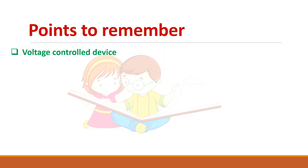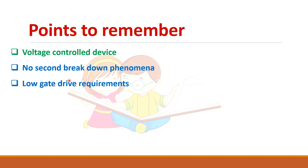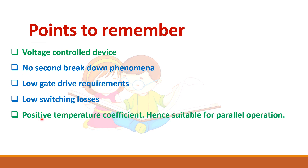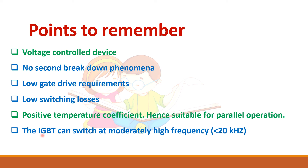Key points to remember: IGBT is a voltage-controlled device. There is no secondary breakdown problem. Gate drive requirement is low. It has low switching losses and a positive temperature coefficient, making it suitable for high-frequency applications — though its frequency capability is lower than that of a MOSFET but higher than that of a BJT. In most modern applications, IGBTs are replacing BJTs, though they are costlier.